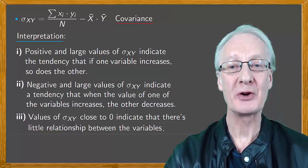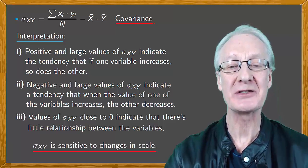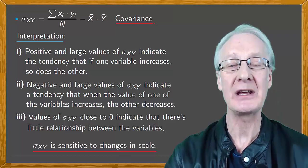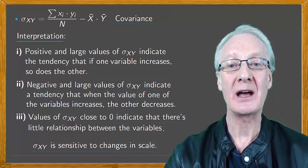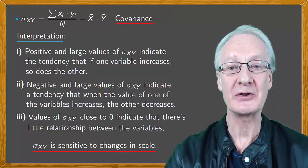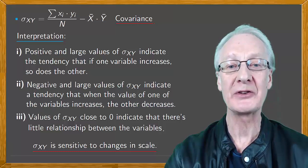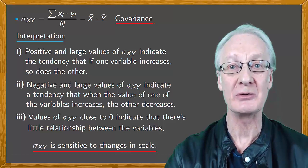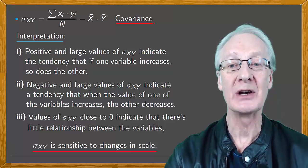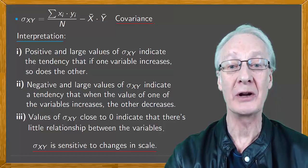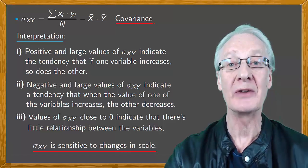Covariance presents a problem in that it's sensitive to changes in scale which complicates the interpretation of its values. This is why we bring in another new parameter, the correlation coefficient. But before we do that, remember that as well as studying the relationship between two statistical variables, our goal is also to predict what the value of one variable is going to be when we know the value of the other.